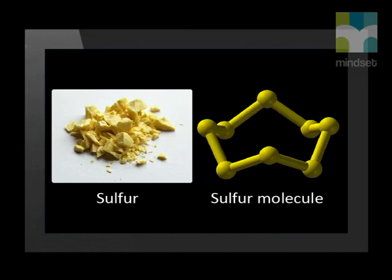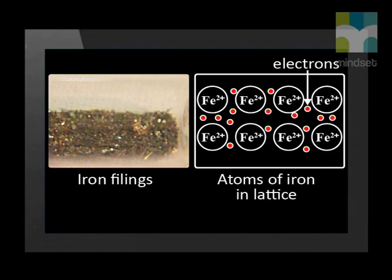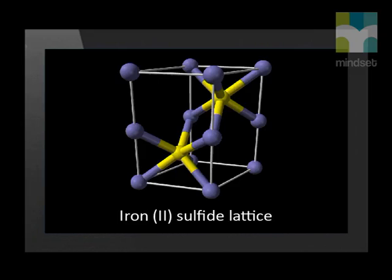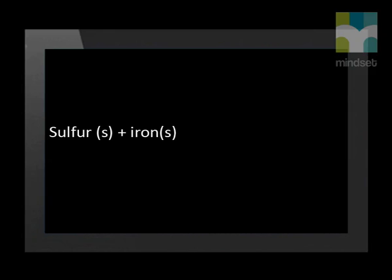In this chemical change, the atoms of sulphur and iron rearrange. Let's look at what happens microscopically. This is what a molecule of sulphur powder looks like — there are eight sulphur atoms in a molecule of sulphur. In metals, the atoms are packed closely together and form a metal lattice of positive ions in a sea of delocalised electrons. During the reaction, the sulphur atoms gain electrons from the iron atoms and form an ionic compound. The atoms arrange in a lattice and the ions are held together by a strong electrostatic force. We can represent this change by writing a word equation: solid sulphur powder plus solid iron forms solid iron sulphide.